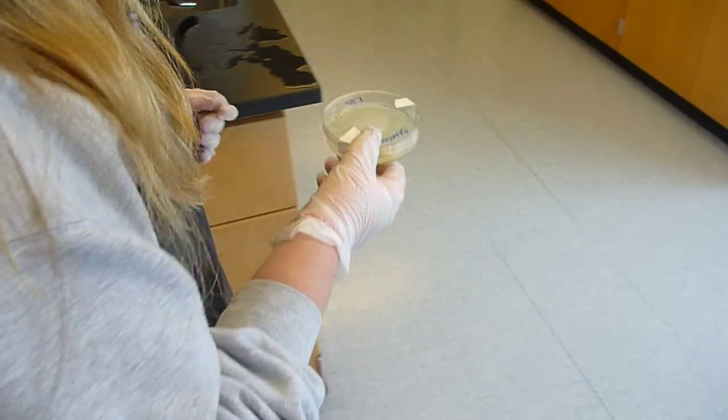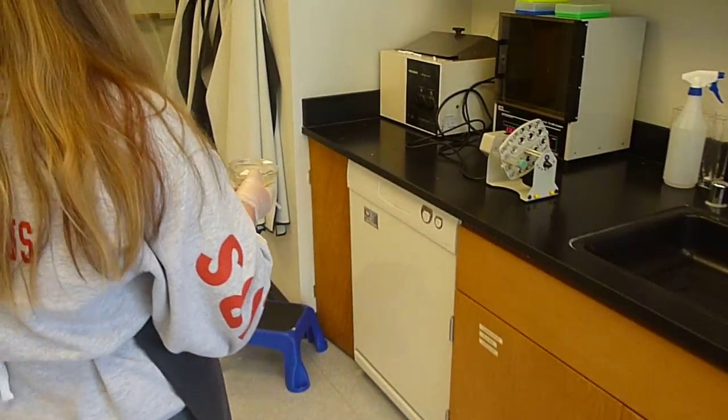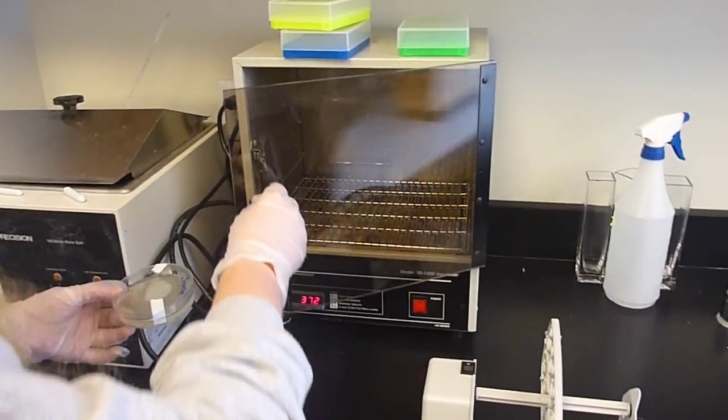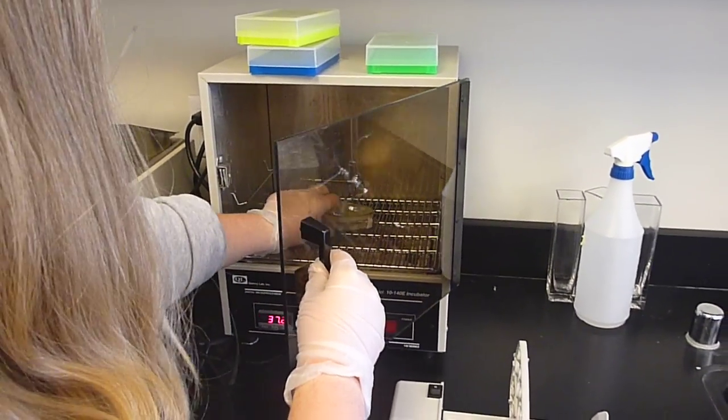And so she's going to now walk it over to our incubator. And so here's our 37 degree incubator. And so she's going to place it in. But notice how she places it in upside down, so it's top down, so that the condensation doesn't interfere with the bacteria growing.